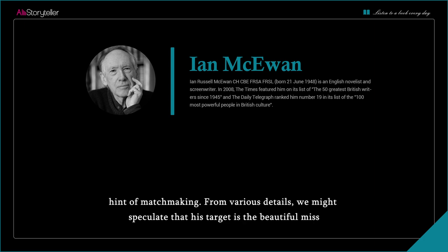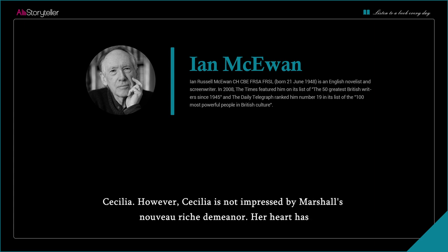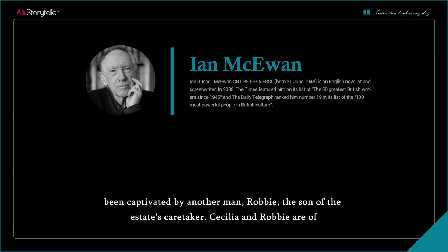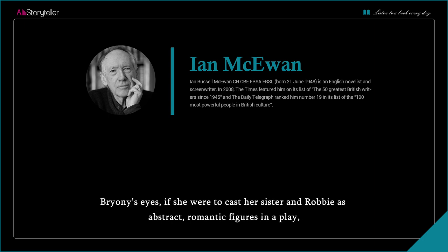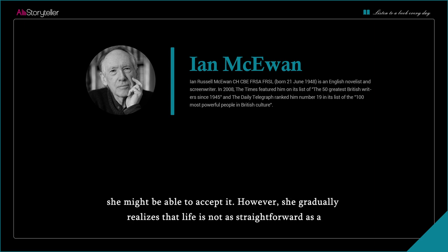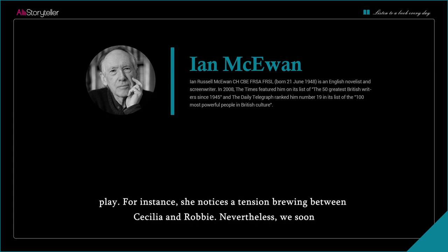Marshall's visit may carry a hint of matchmaking, and from various details we might speculate that his target is the beautiful Miss Cecilia. However, Cecilia is not impressed by Marshall's nouveau riche demeanor. Her heart has been captivated by another man — Robbie, the son of the estate's caretaker. Cecilia and Robbie are of similar age and share common interests, seemingly ideal protagonists in a classical story. In Bryony's eyes, if she were to cast her sister and Robbie as abstract, romantic figures in a play, she might be able to accept it. However, she gradually realizes that life is not as straightforward as a play, noticing a tension brewing between Cecilia and Robbie.